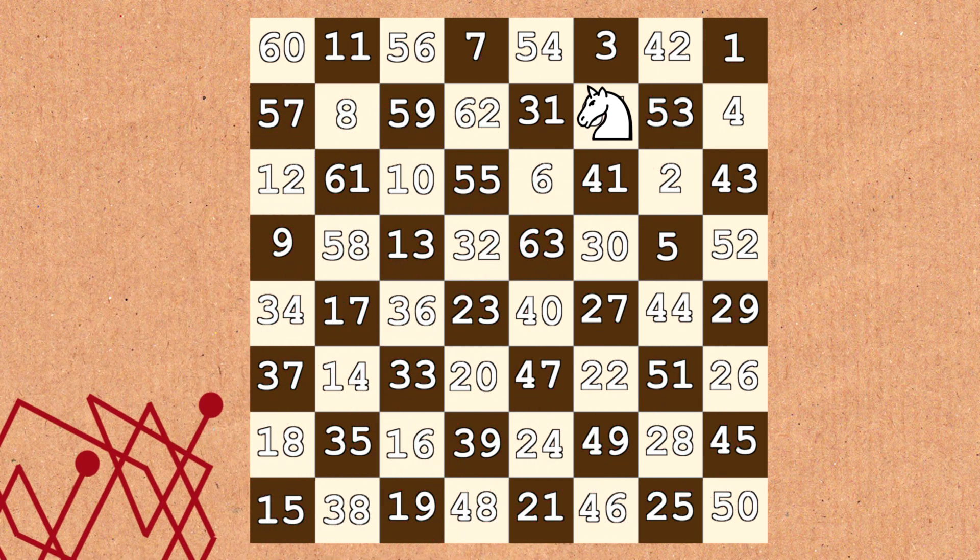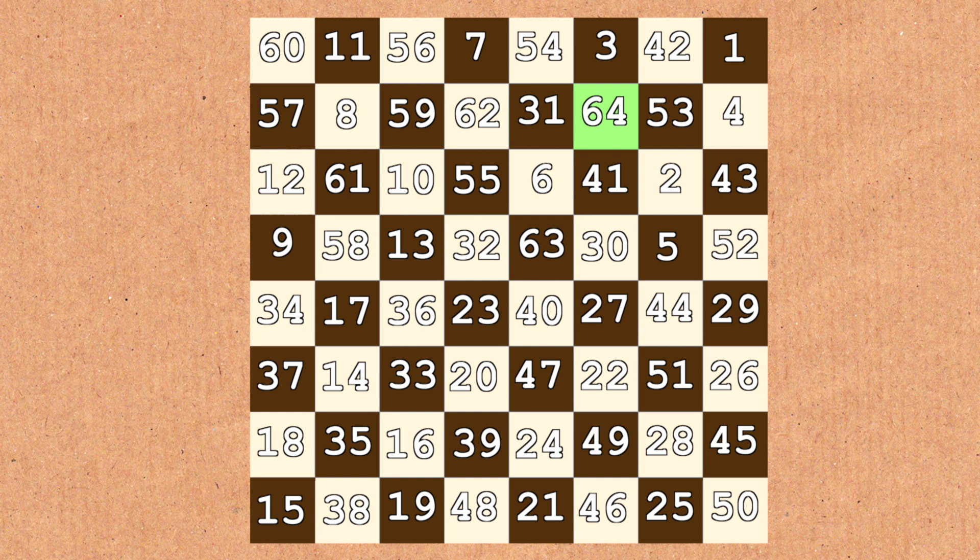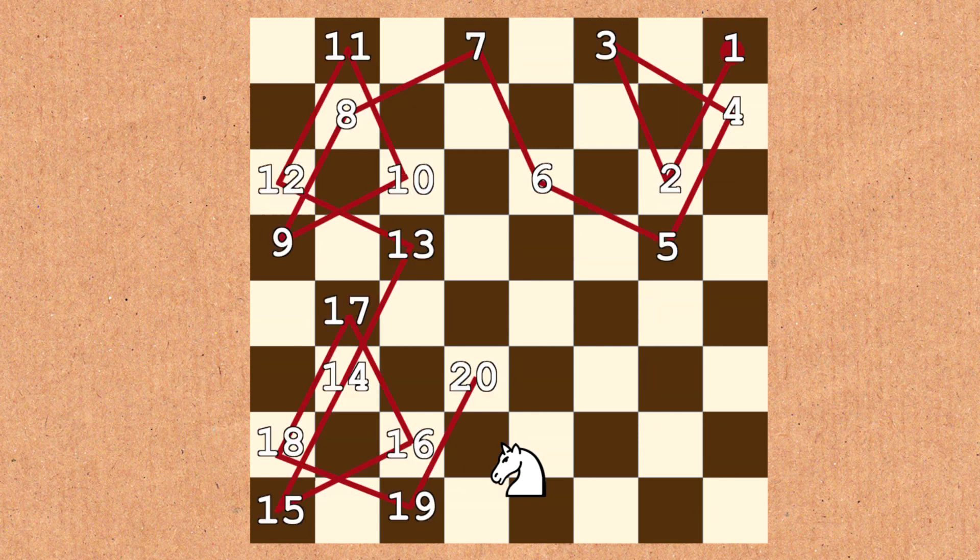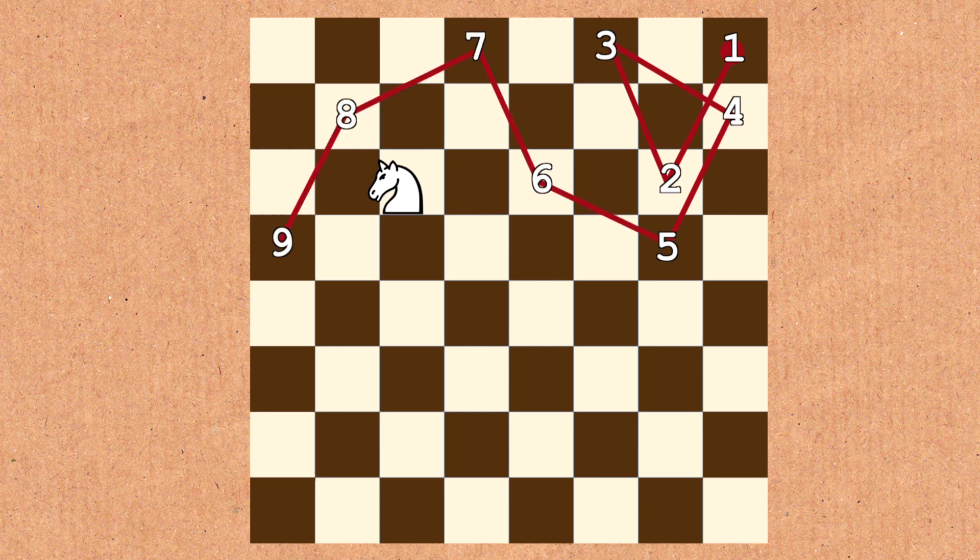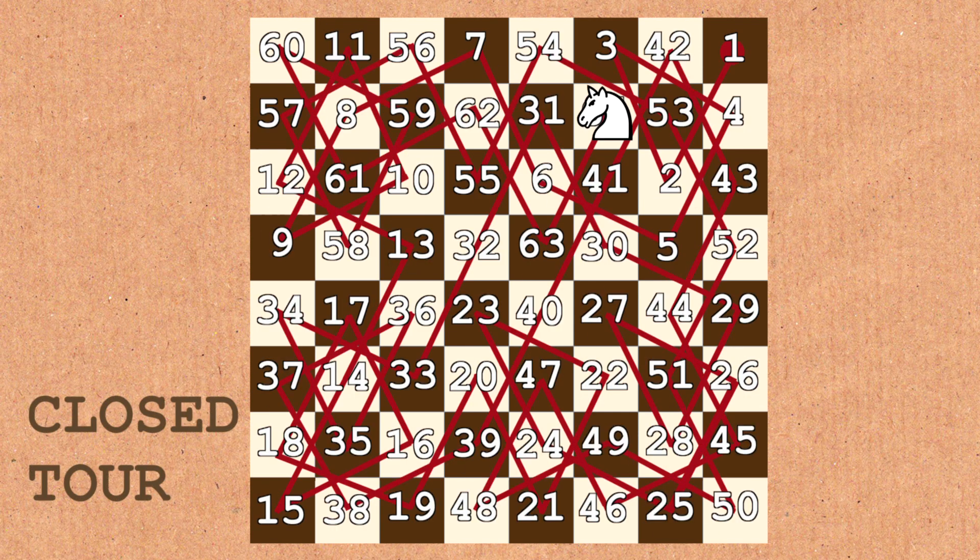Now you can probably see the final square here, number 64, can be joined with the opening square, number one, using one of the knight's L-shaped moves. This means this is sort of a loopable configuration, and we call this a closed tour.